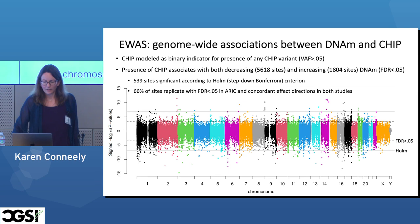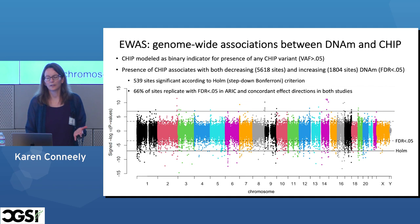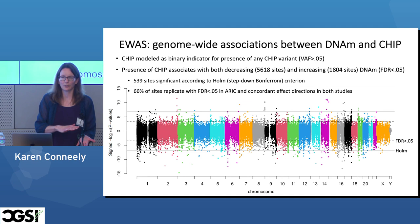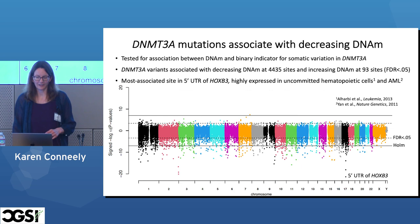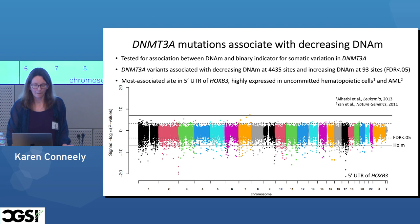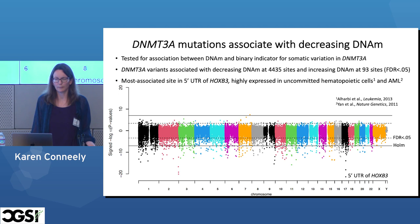One thing we saw right away: we see effects in both directions — a peak of CpG sites showing decreases in methylation with CHIP, and a peak showing increases. Are we seeing a mixture of different mutation types? Some individuals have DNMT3A CHIP, others have TET2, others may have a third kind of mutation. So we broke it down and looked at people with mutations in one particular gene. Starting with DNMT3A: here we see almost nothing but decreasing methylation with CHIP, with just a few exceptions. Over 4,000 sites showed decreasing DNA methylation and not quite 100 showed increasing methylation at an FDR criterion. Our most associated site is in a gene highly expressed in uncommitted hematopoietic cells as well as acute myeloid leukemia.